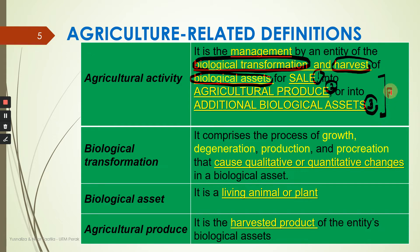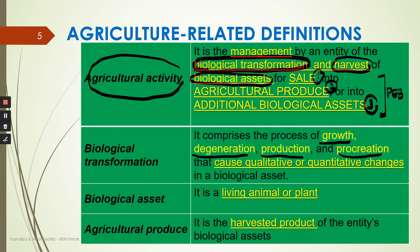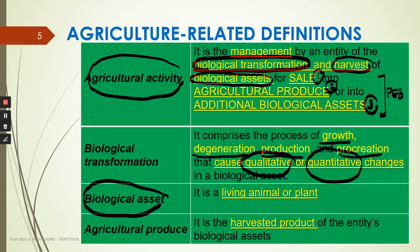These three purposes represent the future economic benefits. Biological transformation, in simple terms, is about growth, degeneration, production, and procreation of a biological asset that will cause quantitative or qualitative changes in the biological asset. Most importantly, biological assets refer to living animals and living plants which are under our management — though plants will have some exceptions, such as the bearer plant.